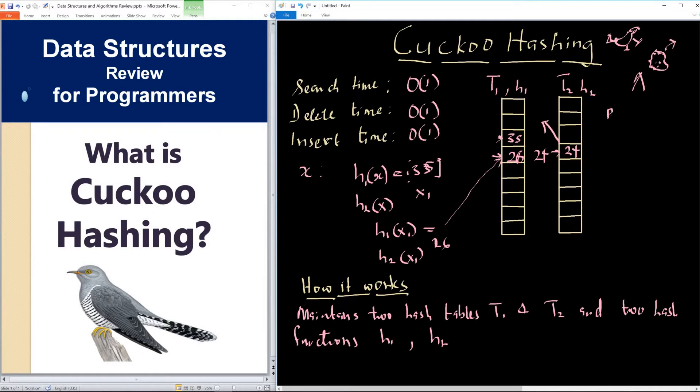If there is something there, we eject whatever is there. Let's say we ejected an item from slot 1, S1, and that item was inserted into S2. But when we check slot S2, we see that S2 also has an item. So we have to remove what is in there and put it in slot S1. In that way, we can draw a graph like this.